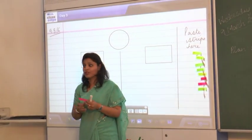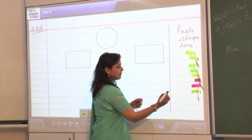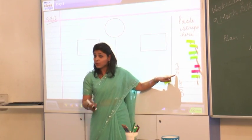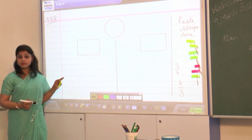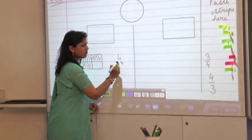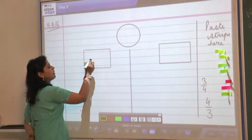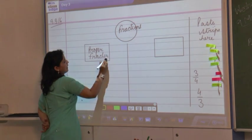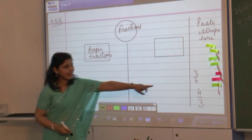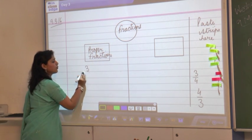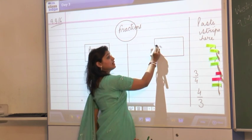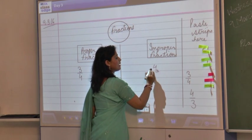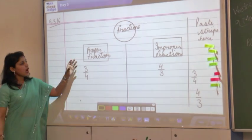The first fraction is 4 upon 3. Let me write here. Now, can we represent 3 upon 4 in a square? Yes. Can I represent 4 upon 3 as well? No. Here we have fractions. One part is proper fraction, which you have given as 3 upon 4. There is a proper fraction. And the other is, which is not proper, that is improper. There we have 4 upon 3.